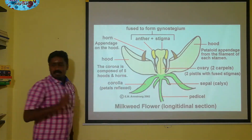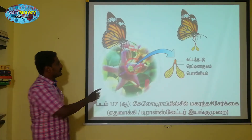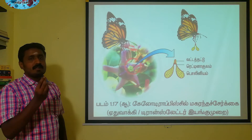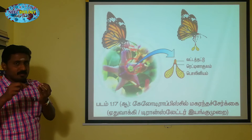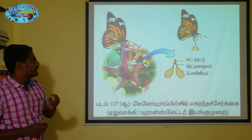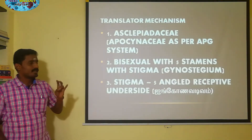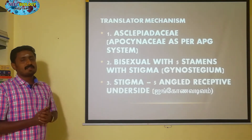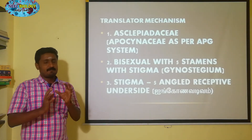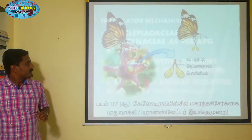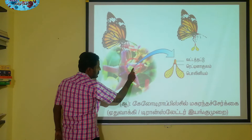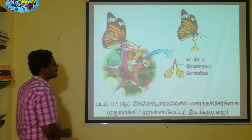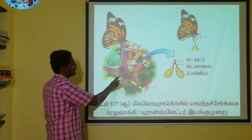This line diagram shows the flower structure. It is a star-shaped, pentagon-shaped structure. The central gynostegium is attached with the anther. The third point is the stigma — five-angled receptive underside. On the side of each anther is the stigma. Five-angled is the key word here.